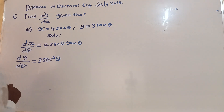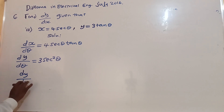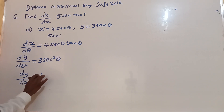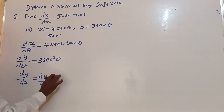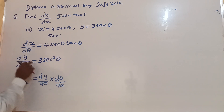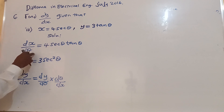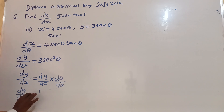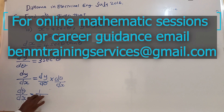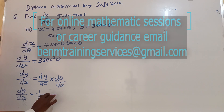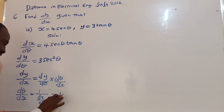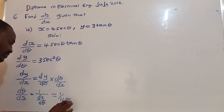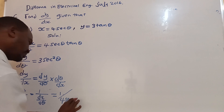So right now, we want to get dy/dx. dy/dx is equal to dy/dθ divided by dx/dθ, which is equal to 1 over 4 sec theta tan theta.